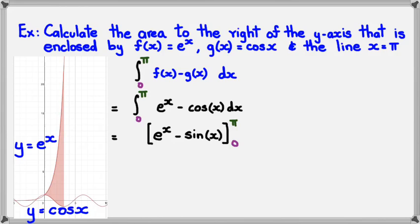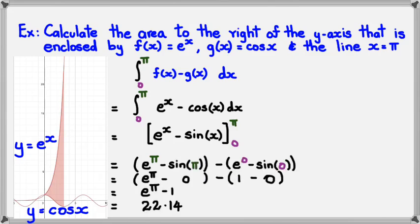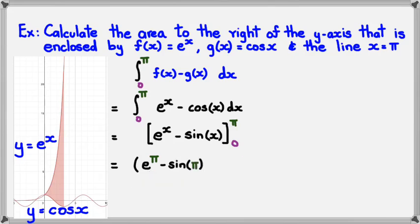So now you need to substitute pi into where x is, and 0, and find out what they are. So we're going to get e to the pi minus sin of pi. Let's try that again. e to the pi minus sin of pi, take away e to the 0 minus sin of 0.